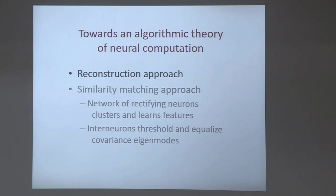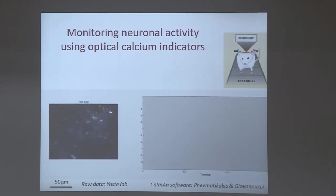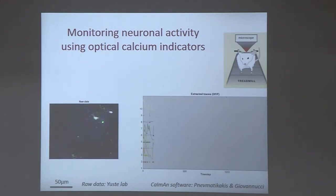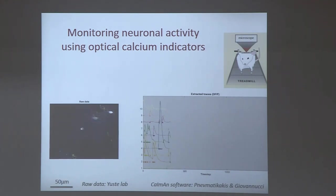To get us started, I want to show some experimental data. This is a video of the activity of neurons in the brain of a live behaving animal running on a treadmill in virtual reality, being shown visual stimuli. These are recordings of neurons in the visual cortex. As the video runs, you can see blobs corresponding to individual neurons light up and down. Different patterns light up at different time points because the animal is shown different visual stimuli.